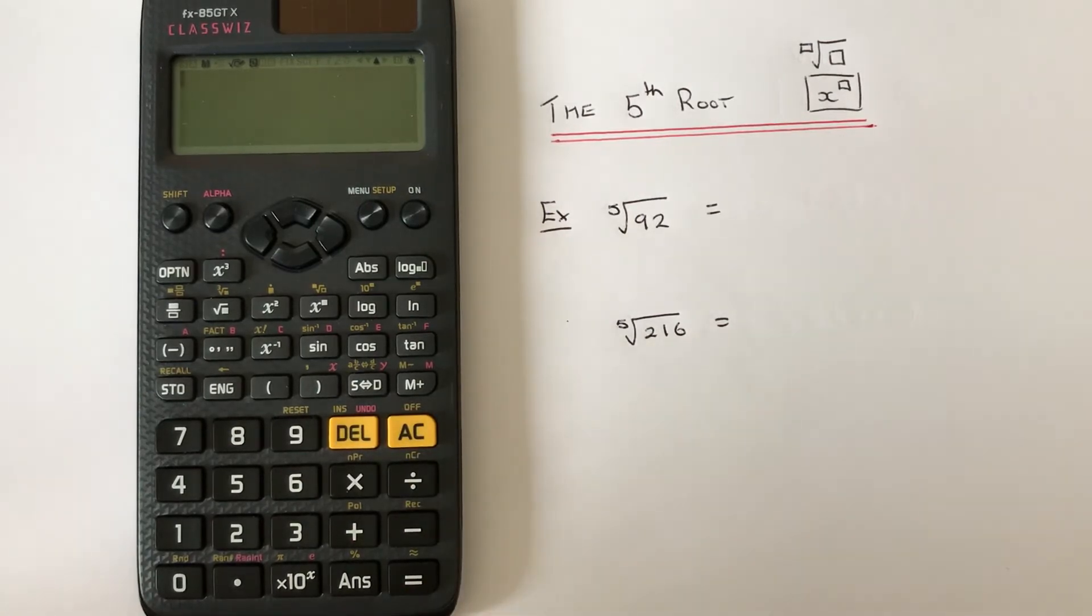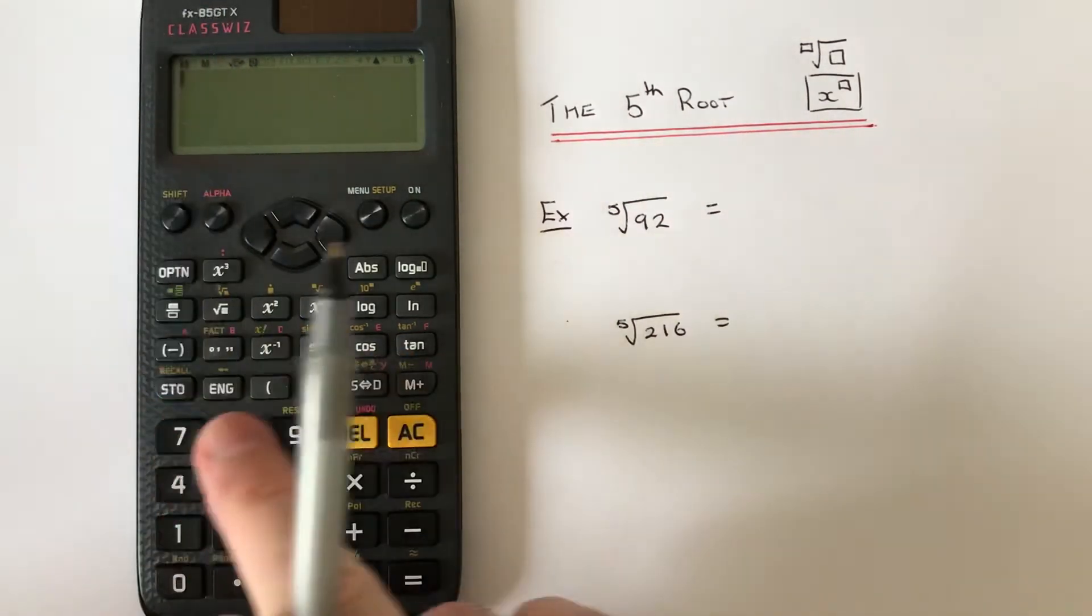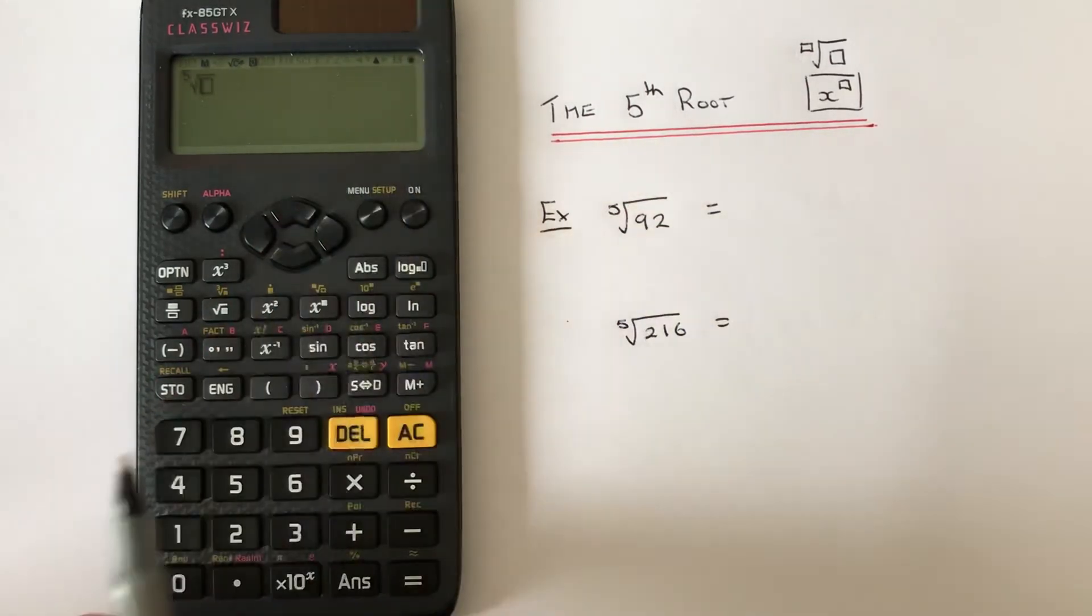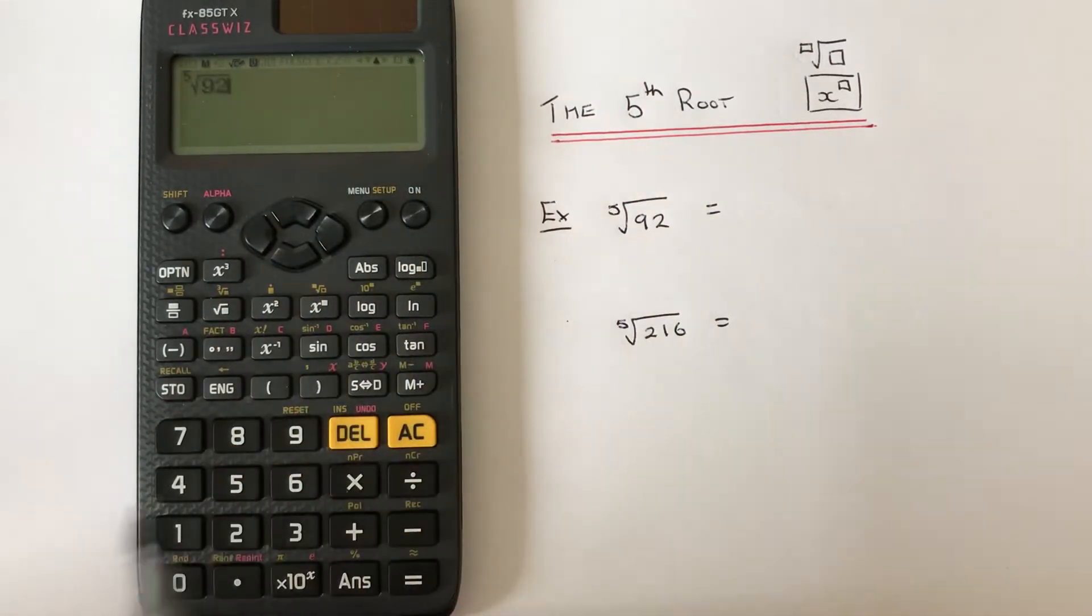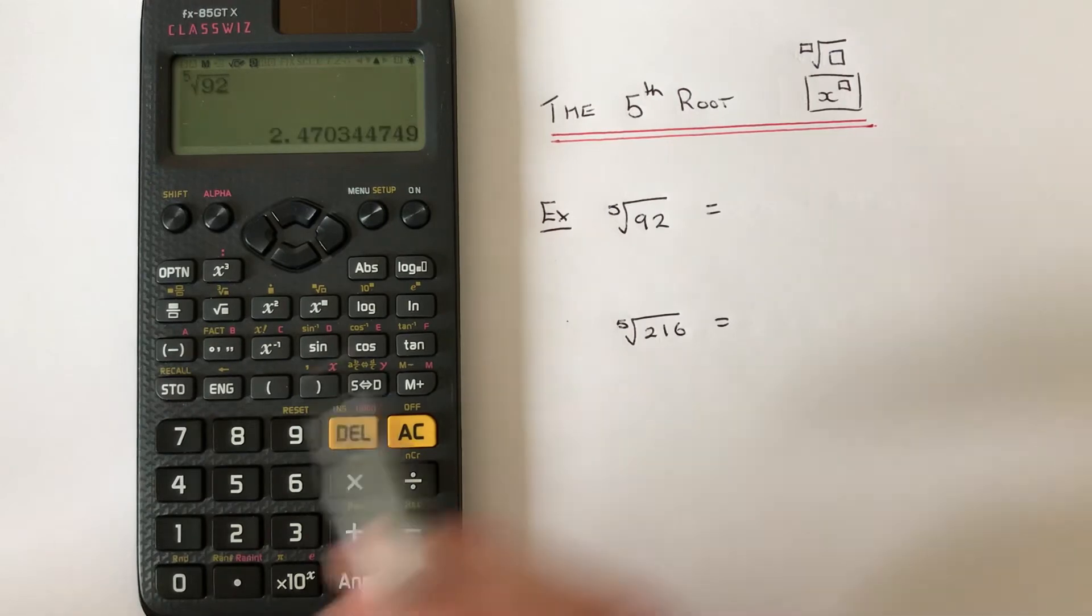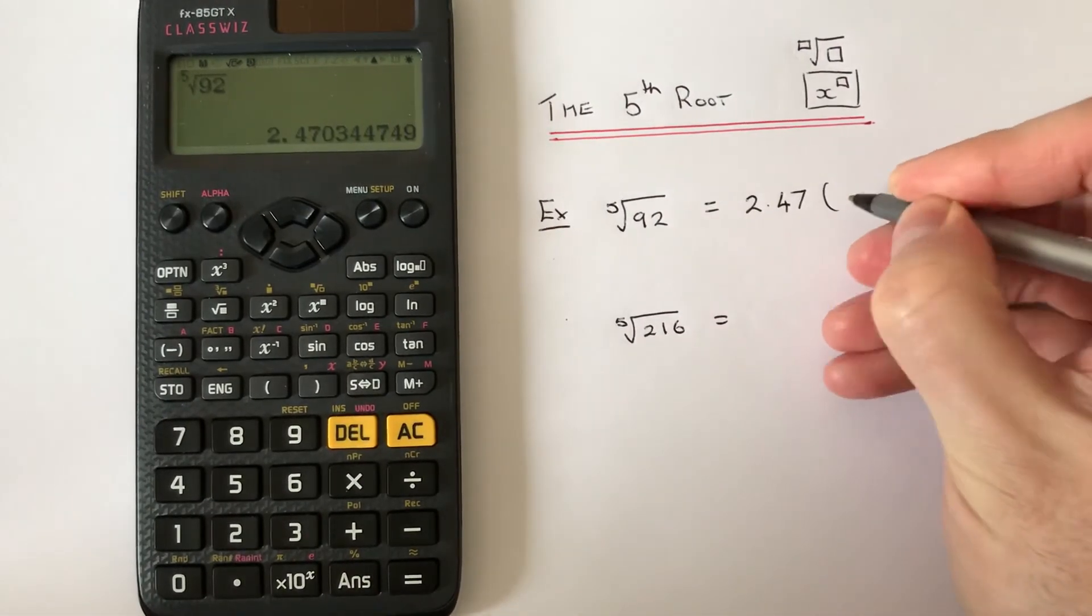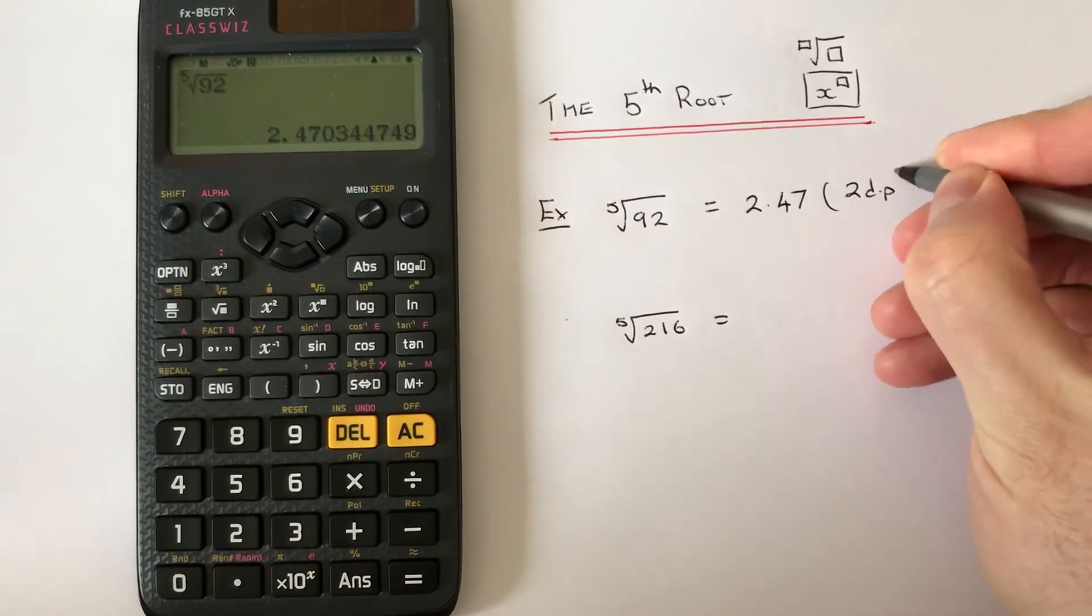The first one is the fifth root of 92. If we press shift, then x box, then type 5 on the root, press the right key, then 92, hit equals, and we get 2.47 rounded to 2 decimal places.